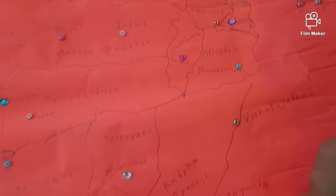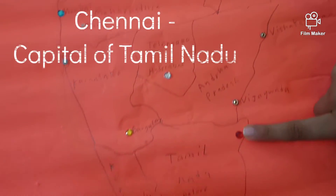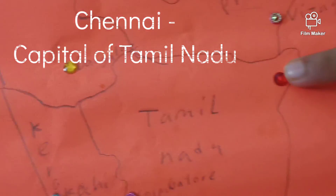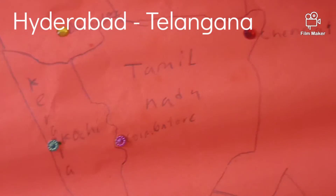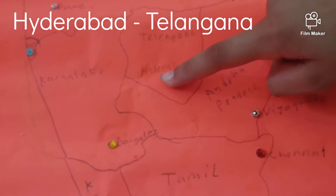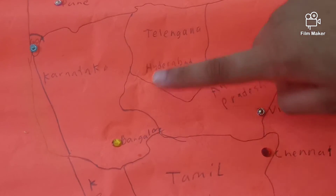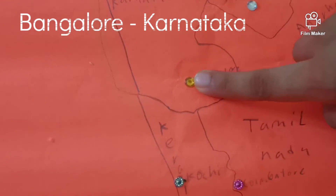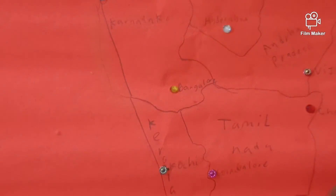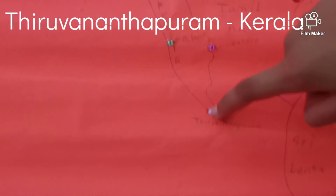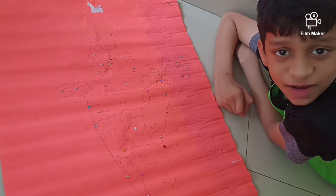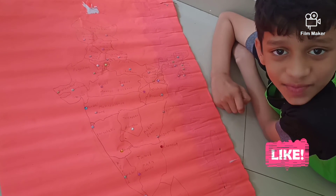Then we have Chennai in Tamil Nadu. We have Hyderabad in Telangana. We have Bangalore in Karnataka. And we also have Thiruvananthapuram in Kerala. Hope you like my Indian political map.